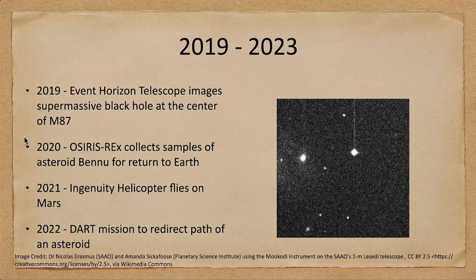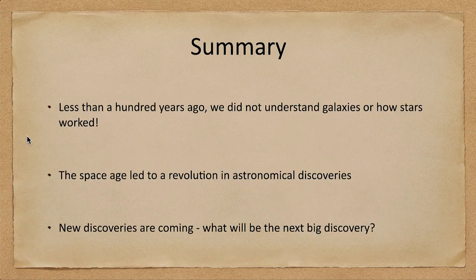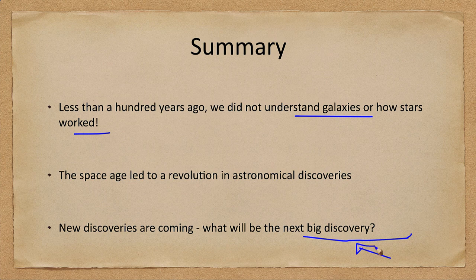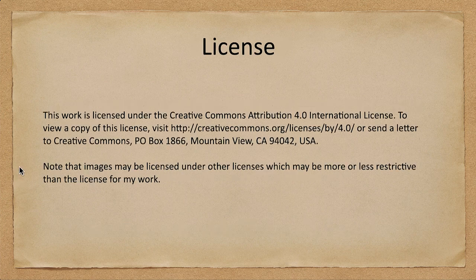That gets us almost up to date. To summarize: less than 100 years ago, we didn't really understand galaxies or what they were, or how stars worked. The space age gave us a revolution in astronomical discoveries. Who knows what is coming next and what will be that next big discovery. That concludes this lecture on a century of astronomy — we'll be back again next time for another topic, so until then, have a great day everyone, and I will see you in class.